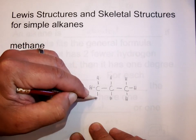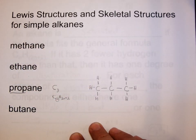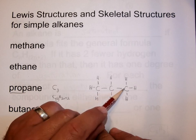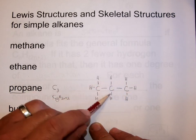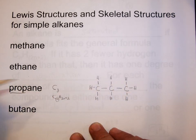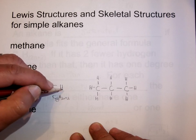And if you wanted the formula for propane, then you could just simply count that you have three carbons and one, two, three, four, five, six, seven, eight hydrogens, so C3H8.